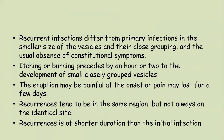Recurrent infection differs from primary infection in that the lesions are of smaller size with close grouping and usually absence of constitutional symptoms. Pain may be present but fever and malaise are usually absent. Itching or burning precedes by an hour or two the development of closely set vesicles. Recurrences tend to be in the same region but not always on the identical site. Recurrence is of shorter duration than the initial primary infection.